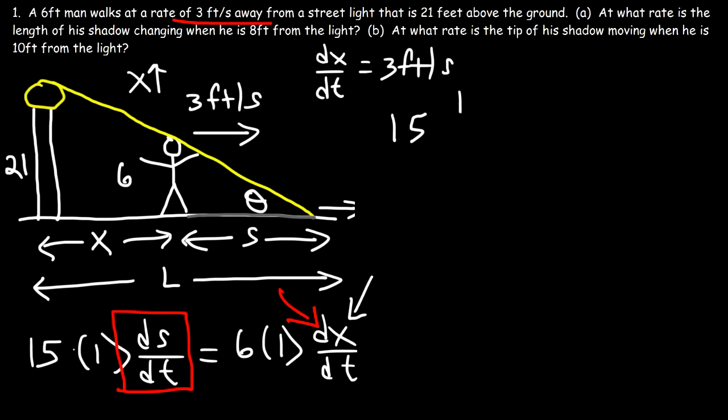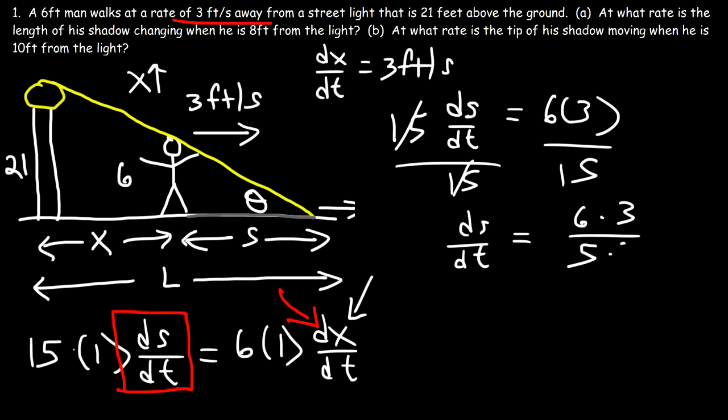So we have 15 dS/dt. That's equal to 6 times 3. Now let's divide both sides by 15. So dS/dt is 6 times 3, and 15 is 5 times 3. So we could cancel a 3. And now this gives us the final answer for part A. dS/dt is going to be 6 over 5 feet per second.